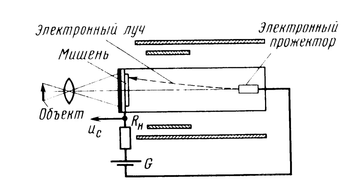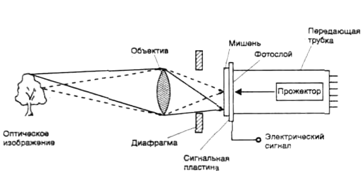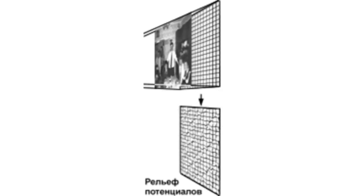One of the most significant parts of Vidikon is a photoconductor target, containing a transparent metallic film with a photoconductor layer from the side of an electron optical system. Under the effect of light, a Vidikon target accumulates electric charges, changing resistance of separate parts of the target and irregularly dispatching current potential in the same manner as the dispatching brightness of separate parts of the picture.